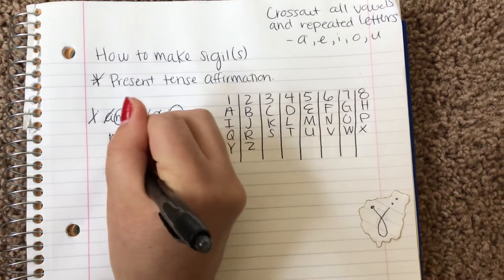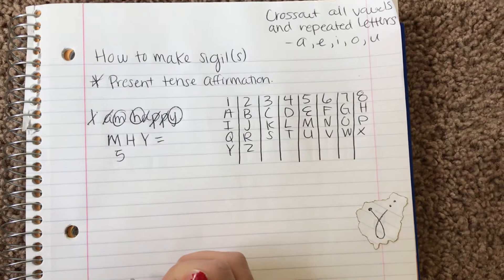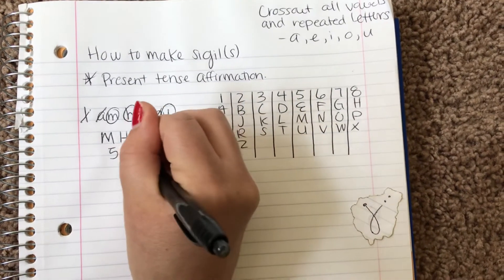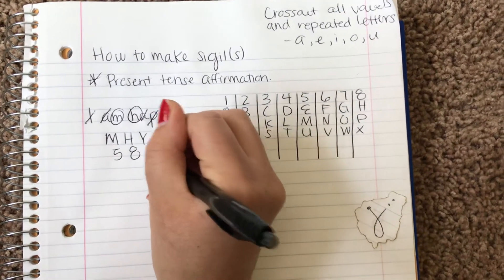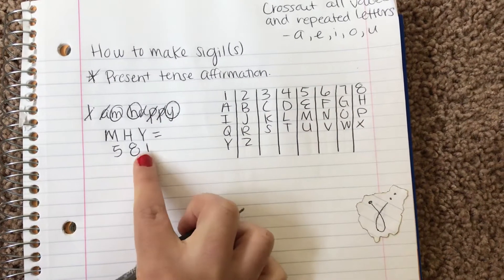Okay, so for M is 5. Then for H is 8. And then for Y is 1. Okay, so now we have 5, 8, 1.